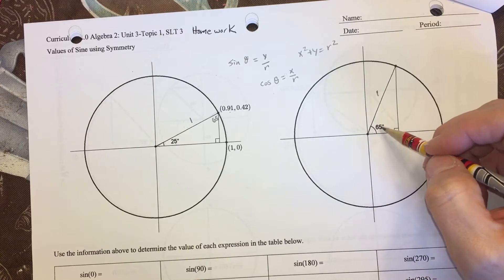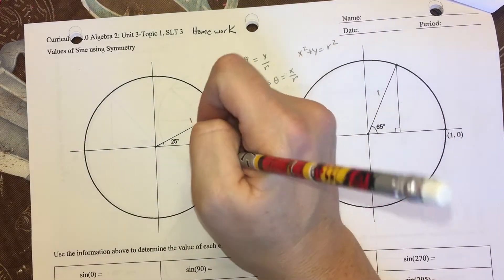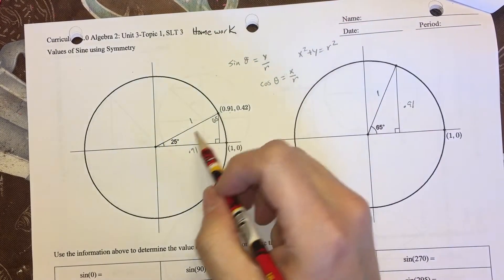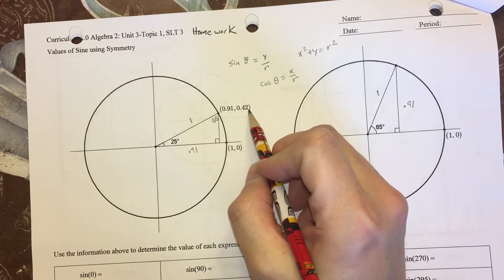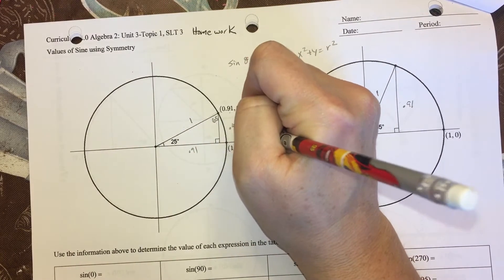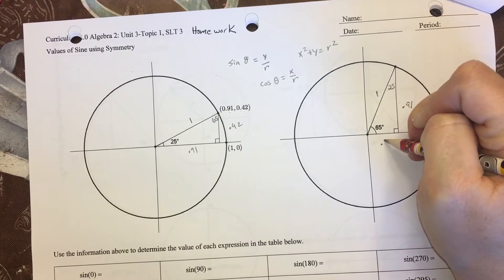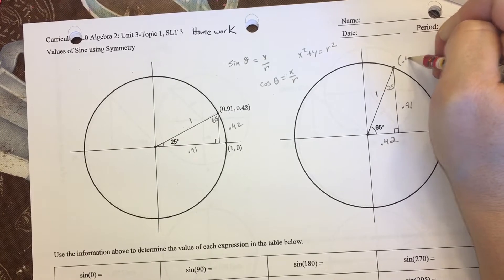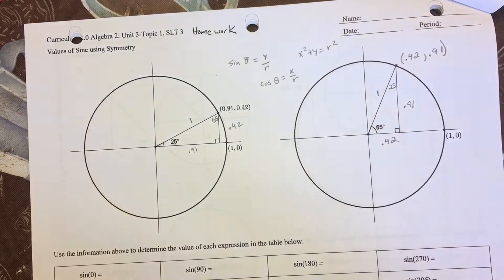I know that the length here is 0.91, so I know that the height of this triangle is also 0.91 because that's opposite the 65 degrees. Opposite the 25 degree angle in this triangle is 0.42, so opposite this 25 degree angle will be 0.42. So now I know that this ordered pair is (0.42, 0.91).